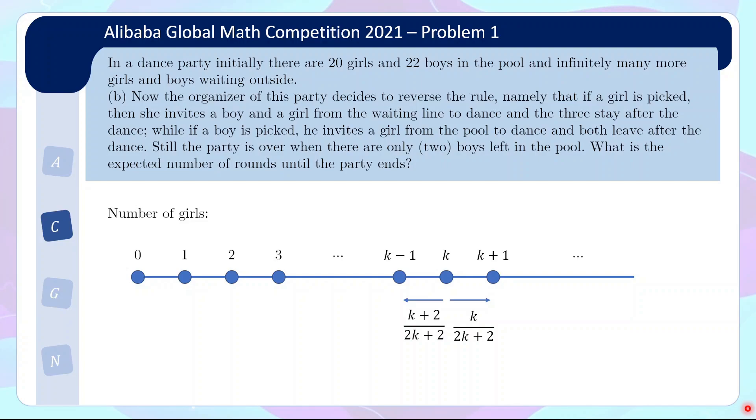And for part 2 of the question, actually it's very similar but the opposite. So what happens is now the organizer of the party decides to reverse the rule. Namely, if you pick a girl, then instead you are plus 1 to the right. If you pick a boy, instead you are plus 1 to the left. So basically now the probability here is flipped in essence. And instead of finding the probability that the party never ends, now we are finding the expected number of rounds until the party ends. So as you can imagine now the probability of going to the left is bigger than to the right and so there's sort of like a gravity effect towards 0. So it turns out the probability of always ending is 1 and we want to find the expected number of rounds until the party ends.